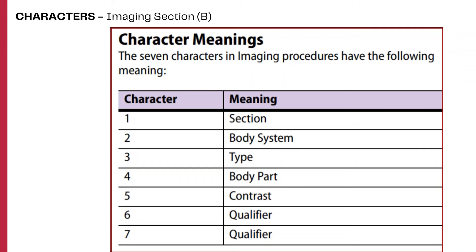The sixth character provides further details regarding the nature of substance or technologies used, such as unenhanced or enhanced contrast images, or whether it's a laser procedure. The seventh character may be used to specify certain procedural circumstances, such as whether it's an intraoperative imaging, intravascular imaging, or transesophageal imaging.